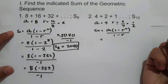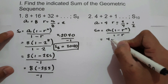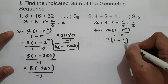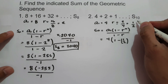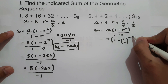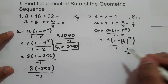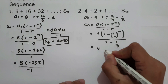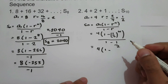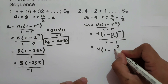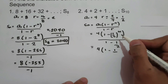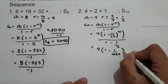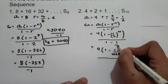Substituting the given values: a sub 1 is 4, times (1 minus 1 half raised to 10), all over (1 minus 1 half). Now, 1 half raised to 10 equals 1 raised to 10 over 2 raised to 10, and 2 raised to 10 is 1024. So we have 4 times (1 minus 1 over 1024), all over (1 minus 1 half), and 1 minus 1 half is 1 half.